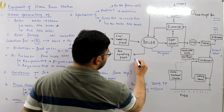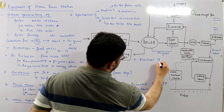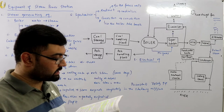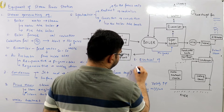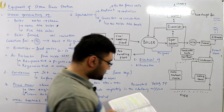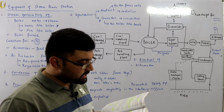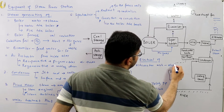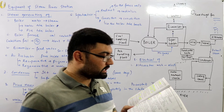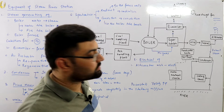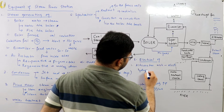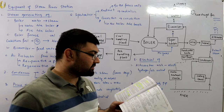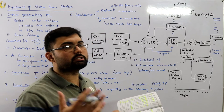Number five is the electrical equipment. A modern power station contains numerous electrical equipment; the most important ones are as follows. Number one is the alternator, which is coupled to the steam turbine and converts the mechanical energy of the turbine to electrical energy. The alternator may be hydrogen or air cooled. The necessary excitation is provided by means of main and pilot exciters directly coupled to the alternator shaft.